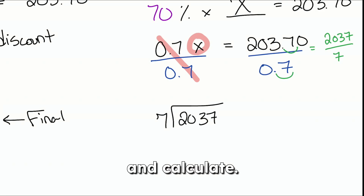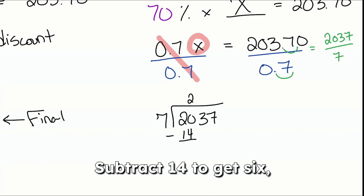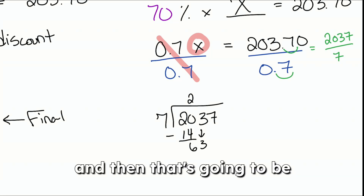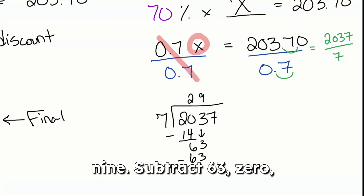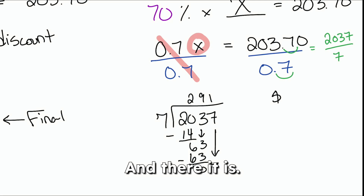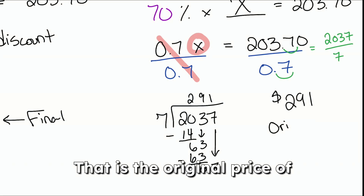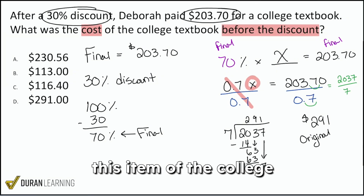Now we calculate: 7 goes into 20 two times. Subtract 14 to get 6, drop the 3 — that gives 63, which is 9. Subtract 63, get zero. Drop the 7, and we get 1. So the answer is 291. That is the original price of the textbook.